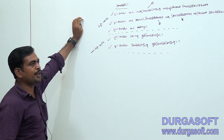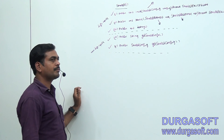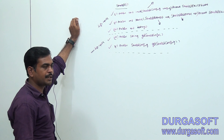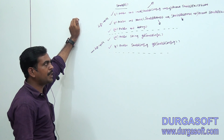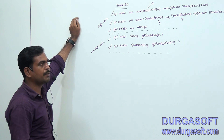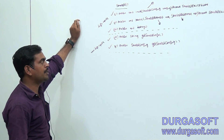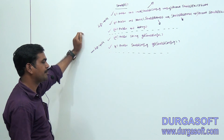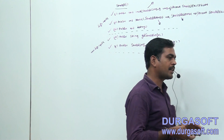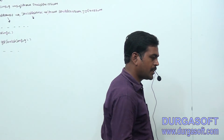Before developing any application, I want to test whether these lifecycle methods are really called or not. If we want to test that, we need to develop one small example. We will see how to develop that example practically, including the web application architecture.